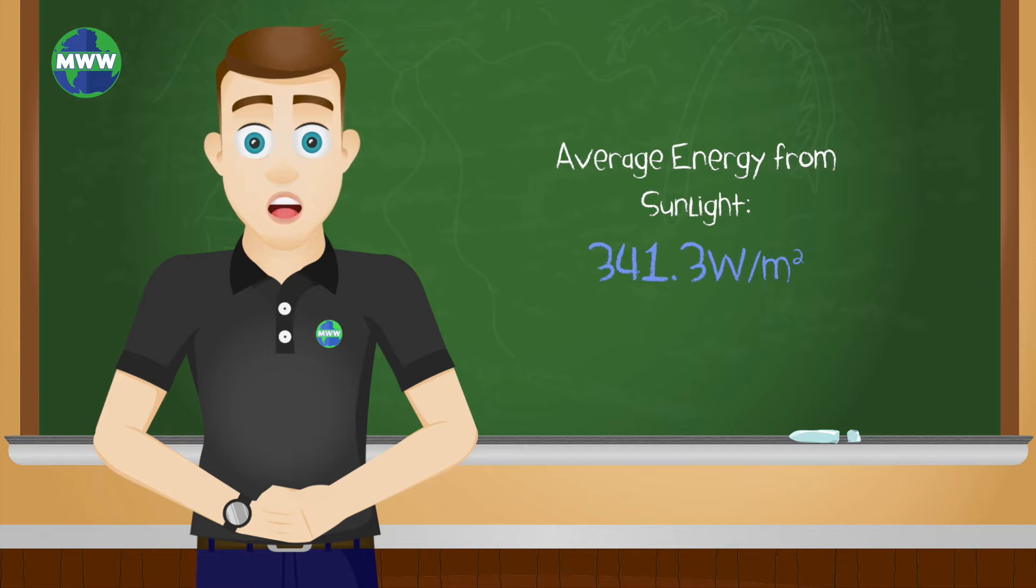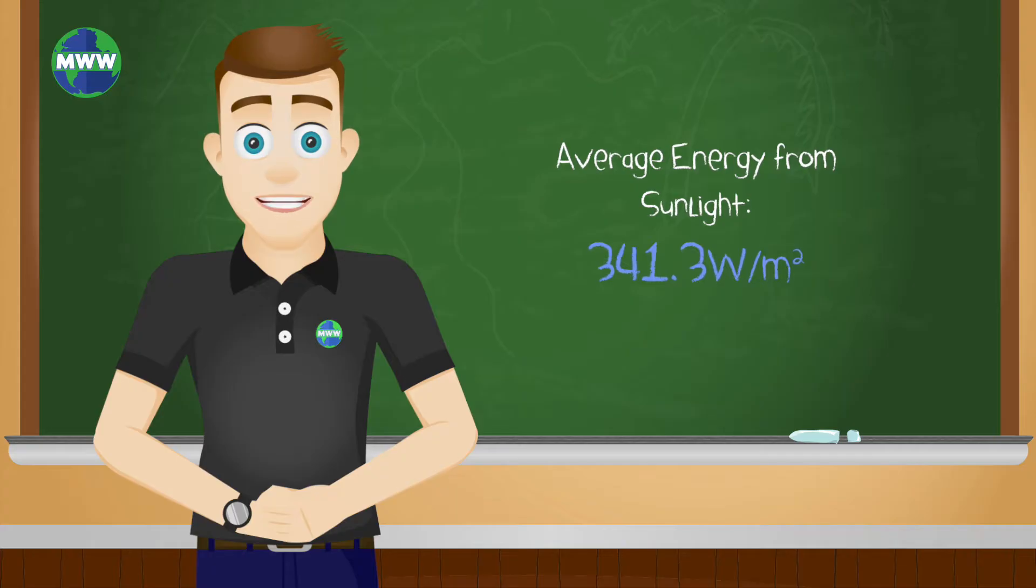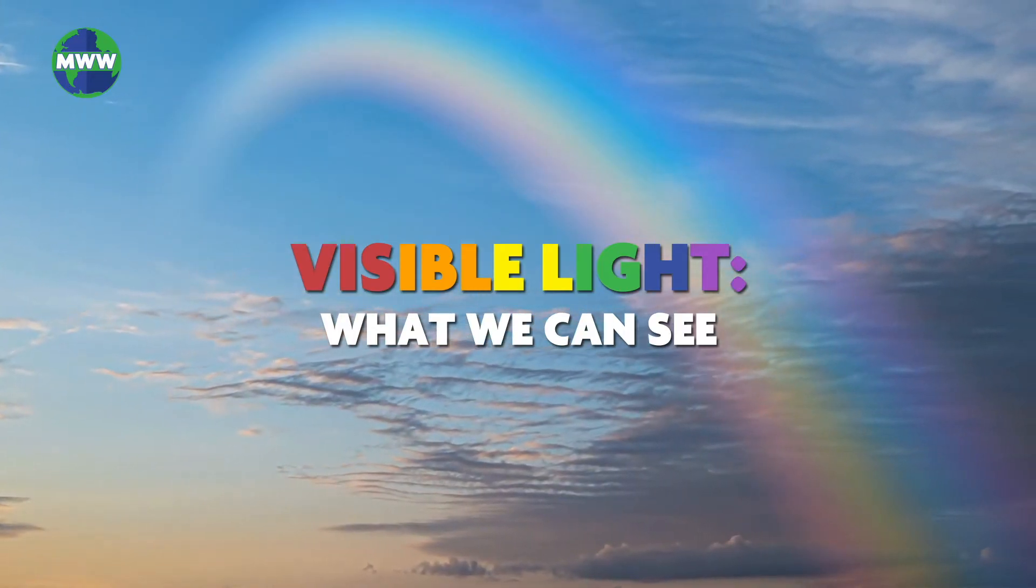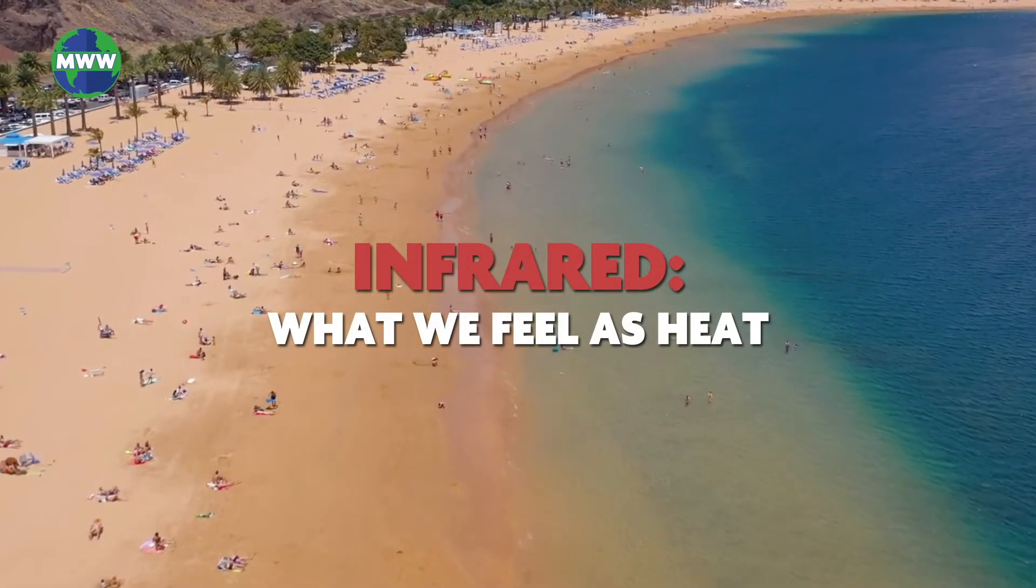The average energy from sunlight coming to the top of Earth's atmosphere is around 341.3 watts per square meter. Visible light is what we can see. On the other hand, infrared radiation is what we feel as heat.